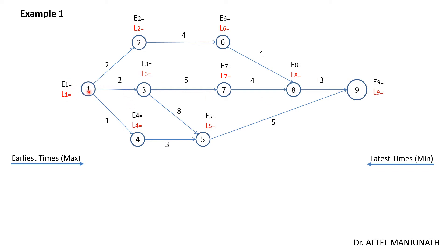First, write the event numbers and against each write E1, L1, E2, L2, E3, L3, and so on up to E9, L9 for the last event. Normally the earliest time for the first event is taken as zero. We calculate earliest times using the formula: earliest finish time of activity i-to-j equals Ei plus d-ij, where Ei is the earliest time of the previous event plus the duration of that respective job.